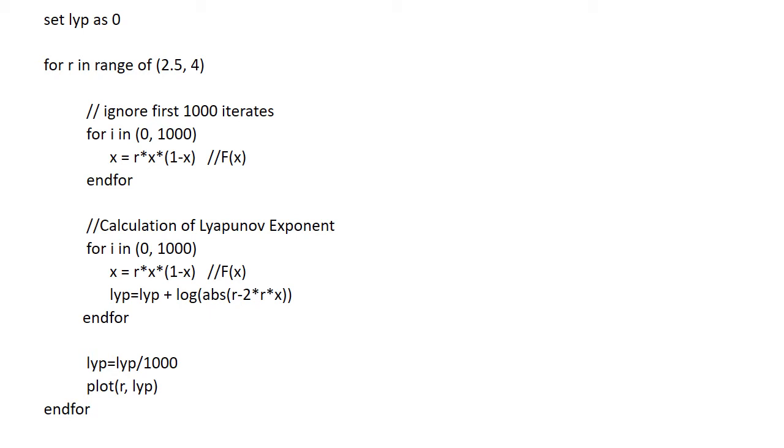In the first for loop, thousand iterations of the logistic map is ignored to remove the transient effect.